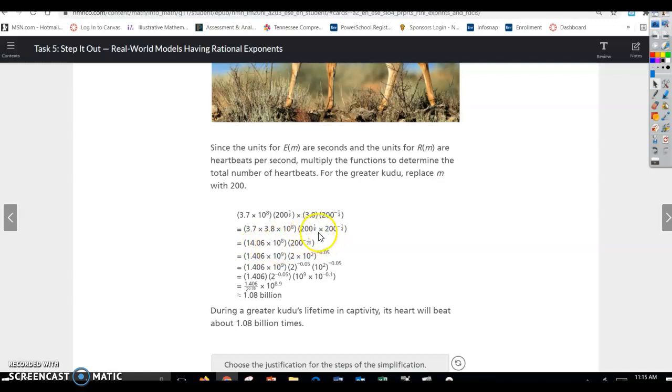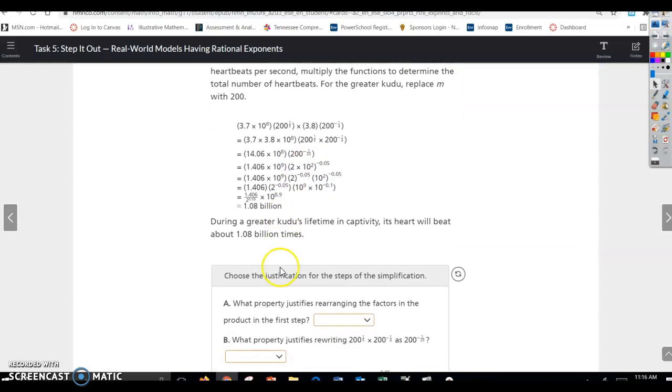Same base here, same base you're multiplying, so you add exponents. So 1 5th plus negative 1 4th. You'd have to have a common denominator, and that would be negative 1 20th. And then, they went ahead and rewrote 200 as 2 times 10 squared. So they're putting that in scientific notation as well. And then, because this is a product, those have to be raised to that power, and they just rewrote negative 1 over 20 as a decimal.